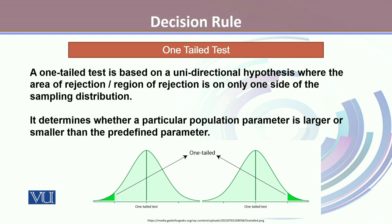It determines whether a particular population parameter is larger or smaller than the predefined parameter. As you can observe in the figures, the figure on the right shows a one-tailed test where the shaded region is on the right, which is called the right-tailed test. On the left side, we have a left-tailed test, where we look at values smaller than the predefined parameter. In both forms of the test, our focus is only on one tail — either the lower tail or the upper tail.